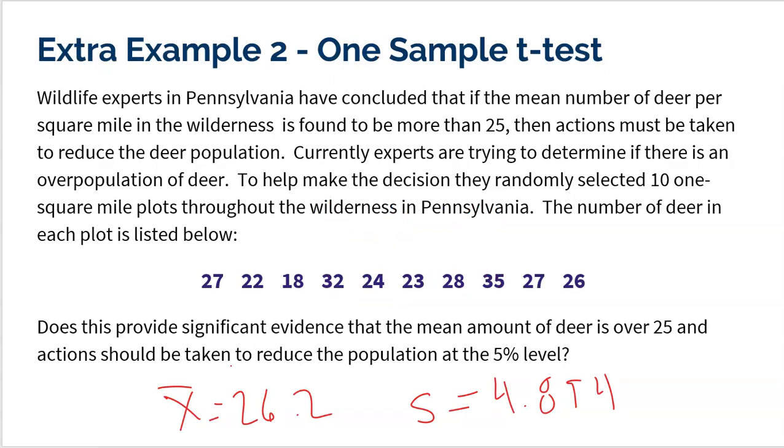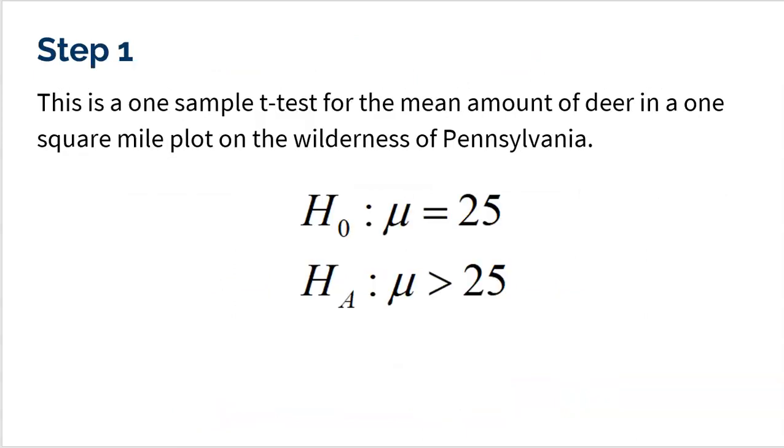All right, because you'll even notice, look at my data. Some plots were like 18. That's well under 25. And some were 35. That's over. And again, that's how we got our mean of 26.2. And that's what we're going to answer: is this enough evidence to actually show that there's an overpopulation problem?